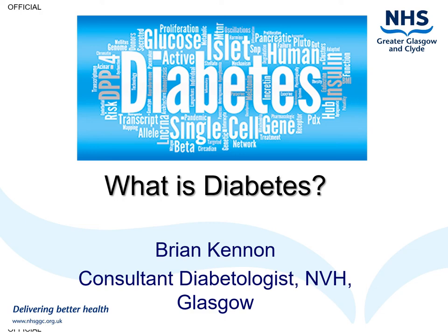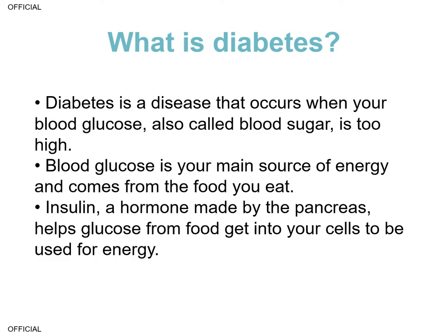Hello, my name is Brian Kennan and I'm a consultant diabetologist at the New Victoria Hospital in Glasgow. In this module I've been asked to discuss what is diabetes. Diabetes is defined as a condition in which your blood glucose, also known as blood sugar, is too high. It's important to consider that blood glucose is your main source of energy and predominantly comes from the food that you eat. Glucose is really important for maintaining the metabolism throughout your body, and it's important that your body tries to regulate it and control it within a given normal range.